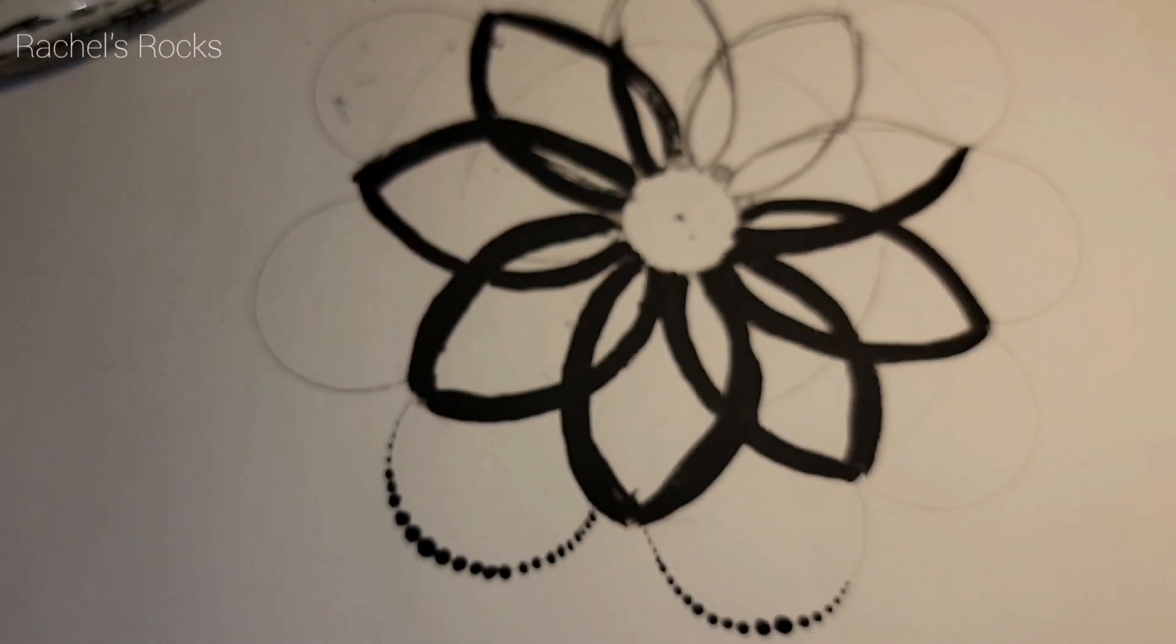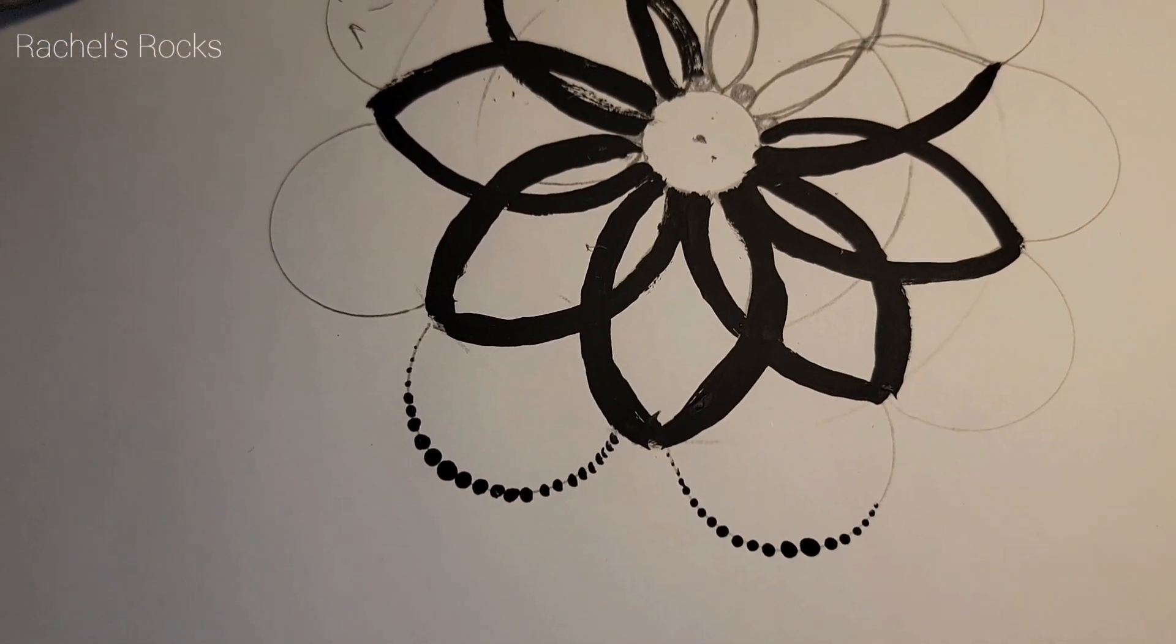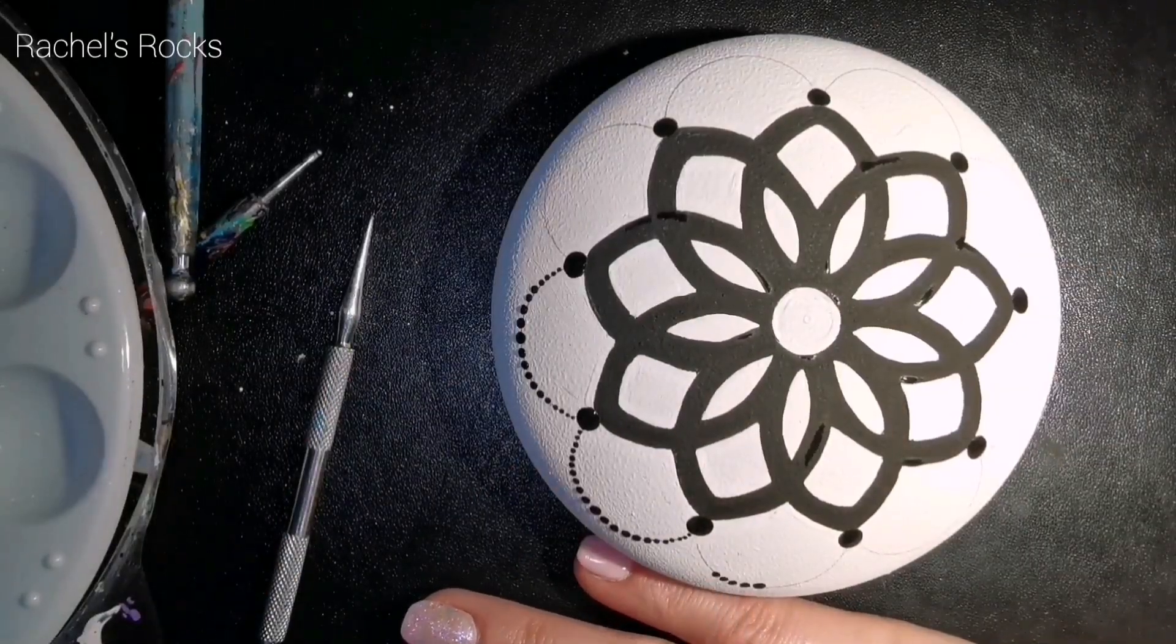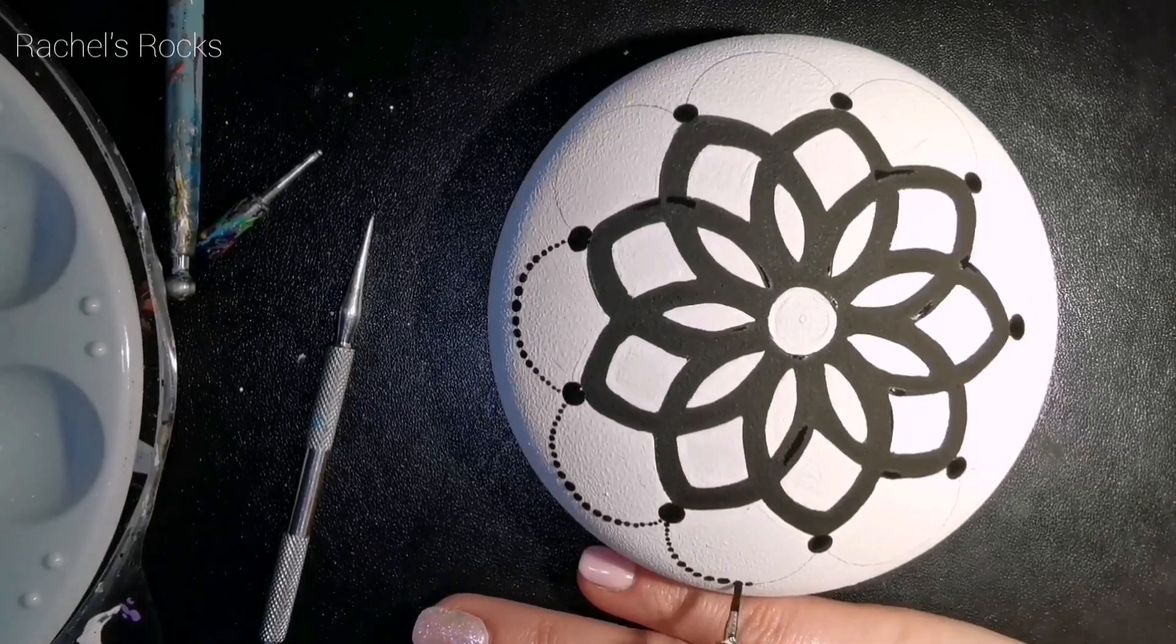But you end up with this, you erase all the parts you don't want, and then you start dotting just like I did in the summer stone tutorial.